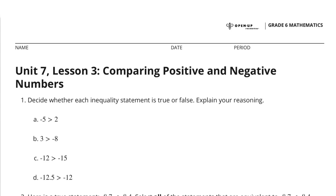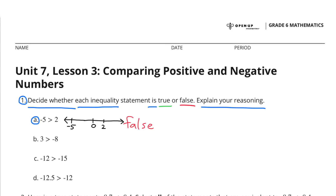Unit 7 Lesson 3: Comparing Positive and Negative Numbers, Number 1. Decide whether each inequality statement is true or false, and explain your reasoning.